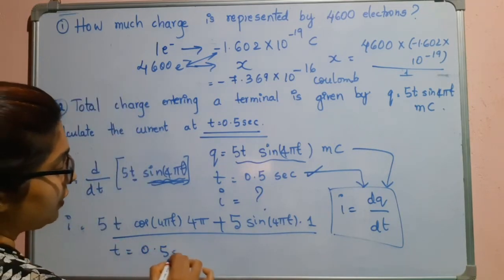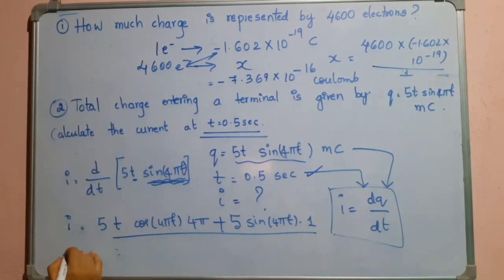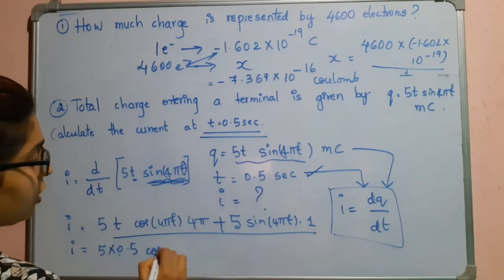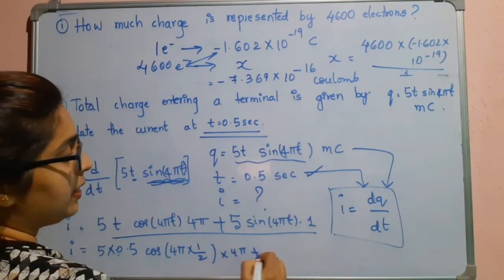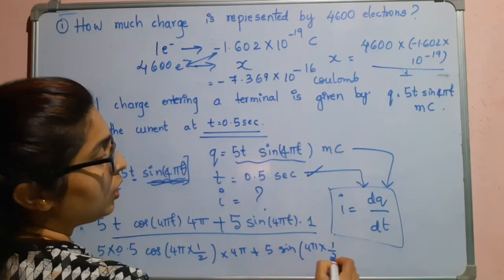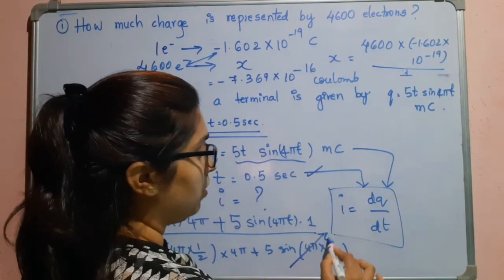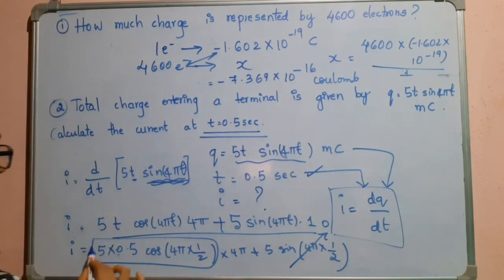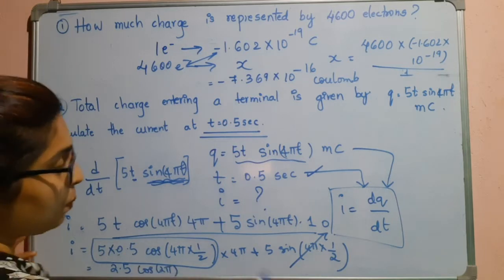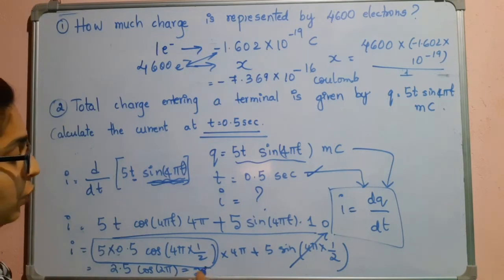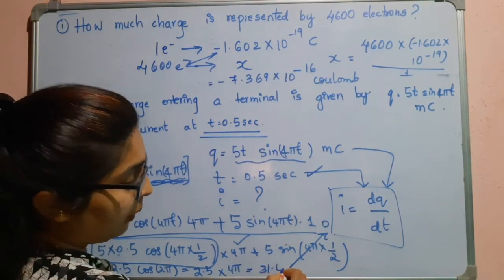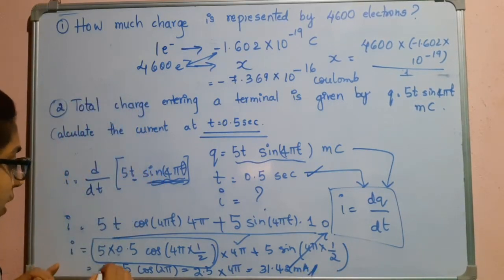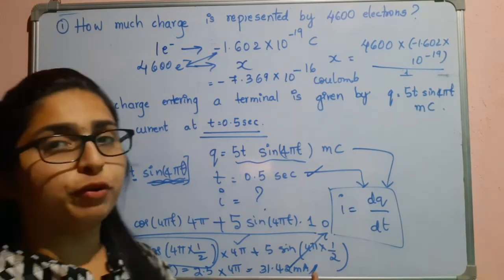After differentiating the charge we have got this equation. Here we substitute t = 0.5 seconds. So i = 5 × 0.5 × cos(4π × 0.5) × 4π + 5 × sin(4π × 0.5). Now sin(2π) = 0, so that term vanishes. We are left with 2.5 × cos(2π) × 4π. Since cos(2π) = 1, this gives 2.5 × 4π = 31.42 milliamperes.